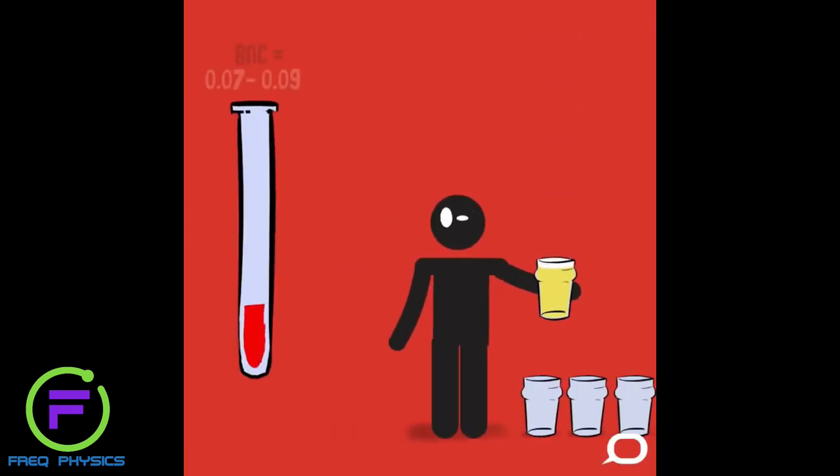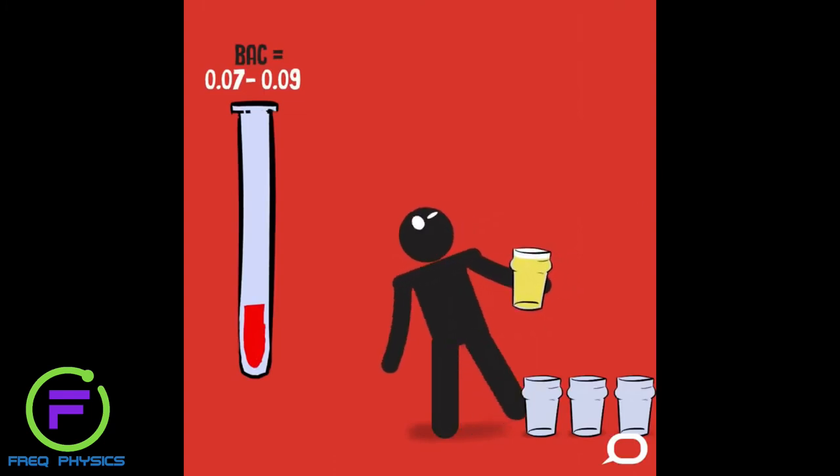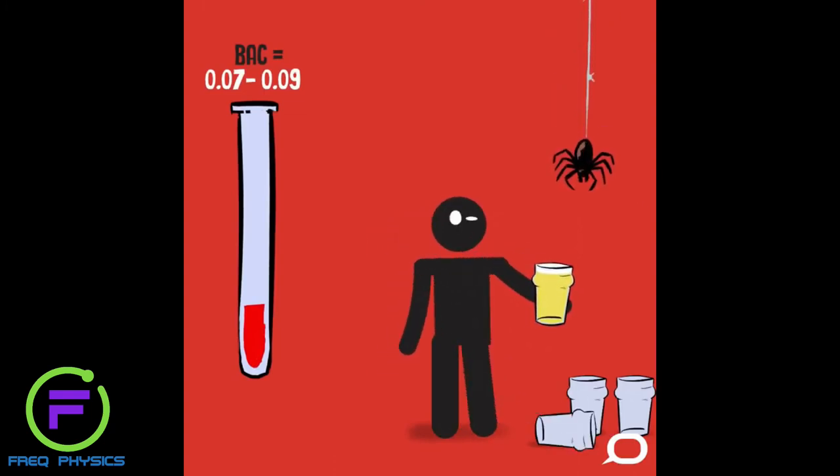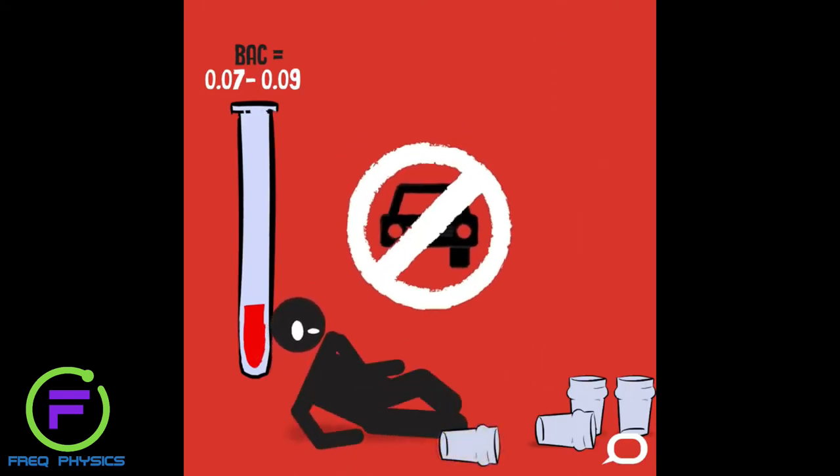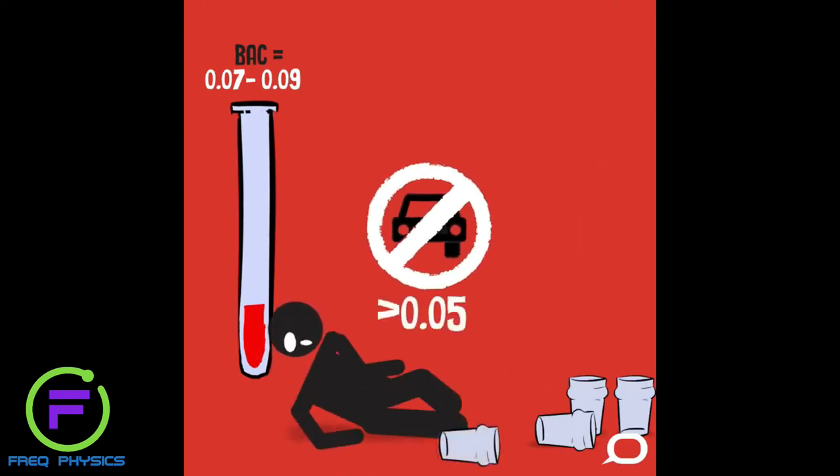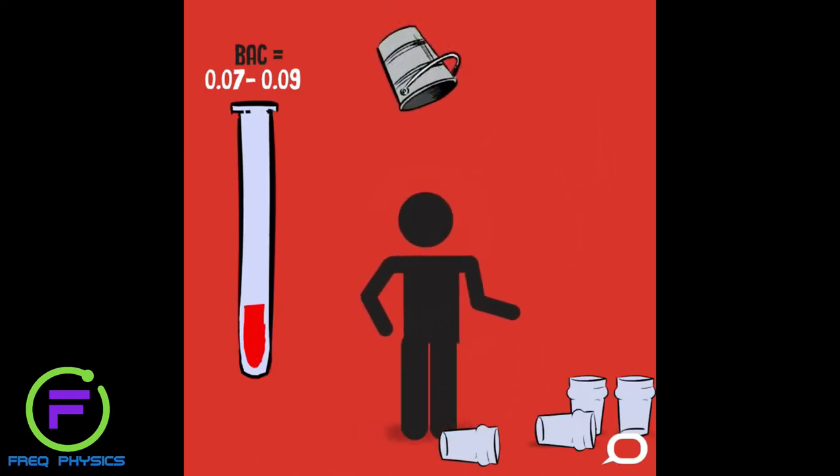At a BAC of 0.07 to 0.09, your speech will start to slur and you'll not be as balanced when you move. There will also be a decrease in reaction time and coordination - hence the legal driving limit of 0.05 in Australia. Your hearing and vision will also be impaired.